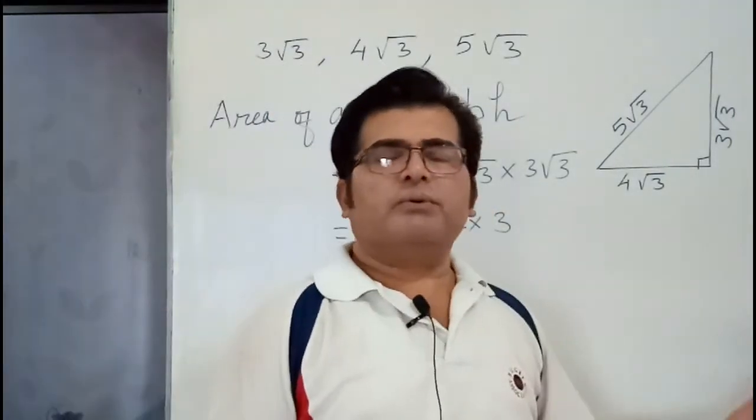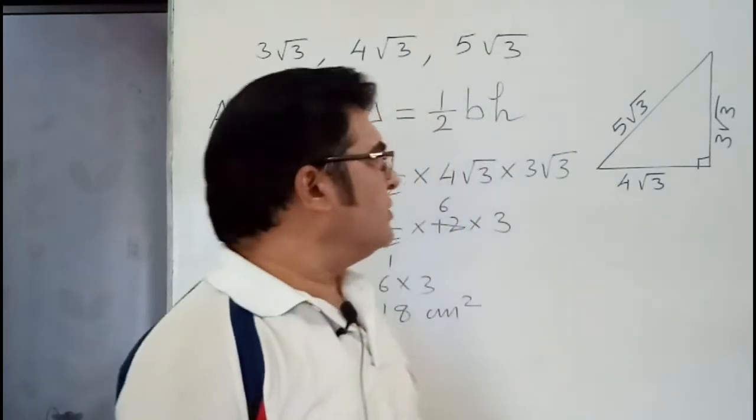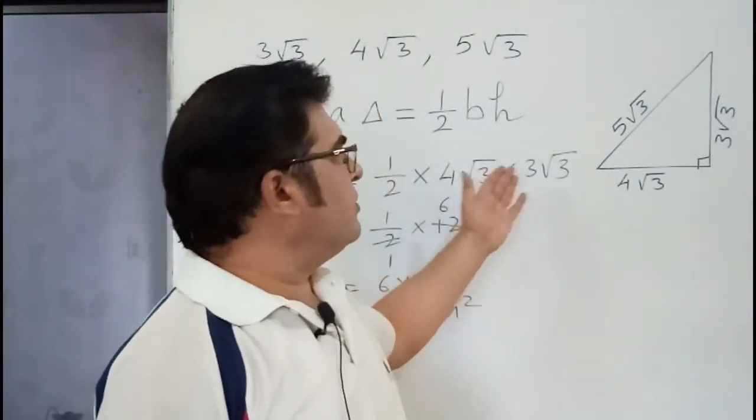So half into 4√3 into 3√3, then simply...